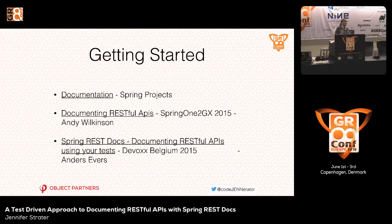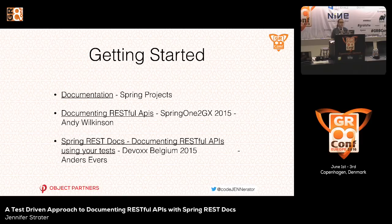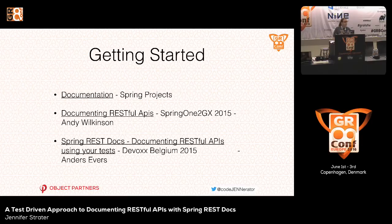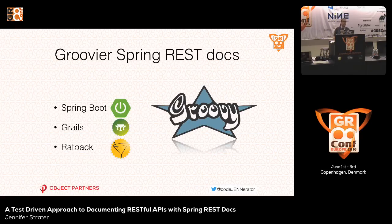To get started, of course you want to read the documentation. There are two really good presentations I suggest watching as well. The first is from the project lead Andy Wilkinson — he gave a very deep dive at Spring One, a 90-minute talk on how this works and where the project is going. The other presentation is from DevOxx — a short 30-minute presentation that spends a lot of time talking about the same experiences in implementing it and why you should convince your manager to support this. Both are also examples of using it with hypermedia. What I wanted to do today was add to their work by providing groovier Spring REST Docs examples using Spring Boot, Grails, and Rat Pack.